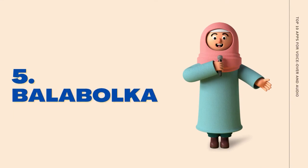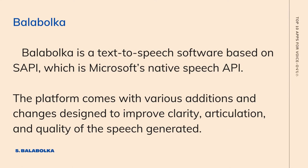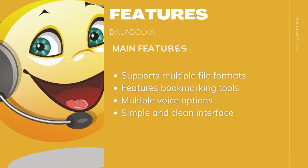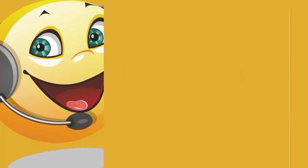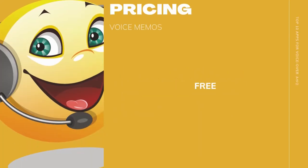Balabolka is a solid text-to-speech software based on SAPI, which is Microsoft's native speech API. The platform comes with various additions and changes designed to improve clarity, articulation, and quality of the speech generated. By default, Balabolka uses Microsoft Anna to convert text files to speech. With Microsoft's speech functionalities, the program can check your spelling errors and is compatible with numerous spell checkers online.